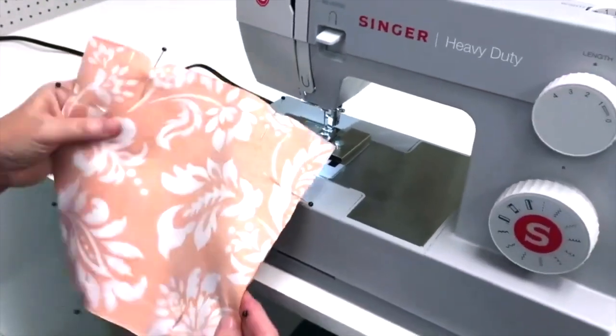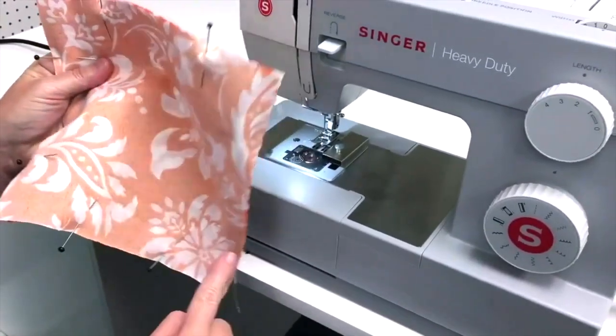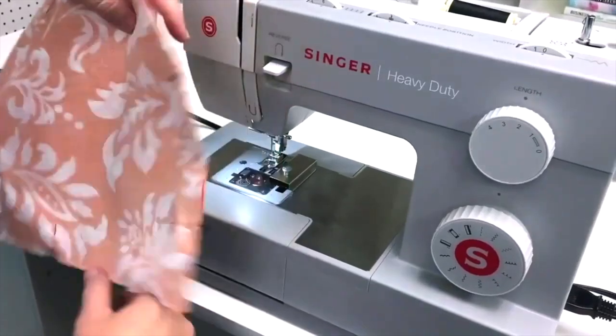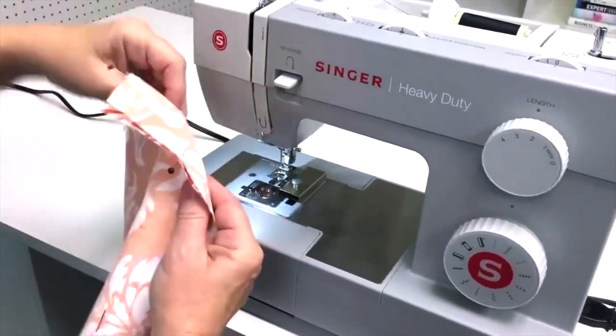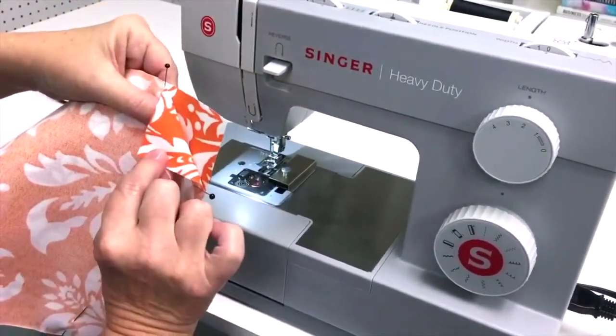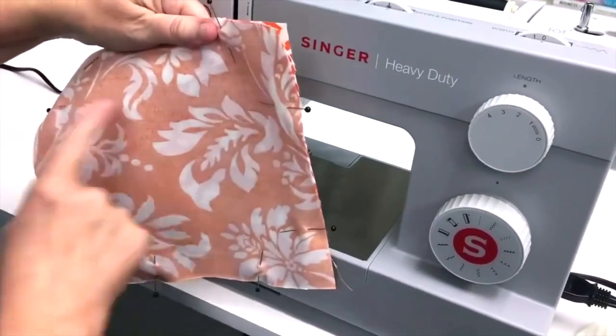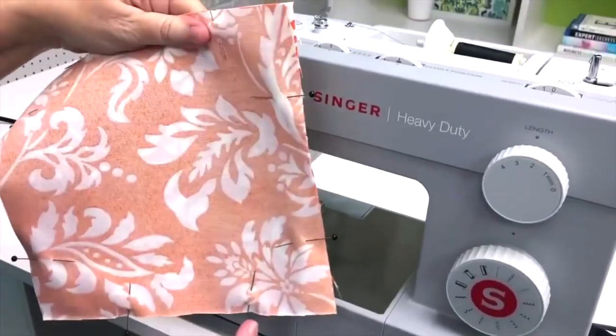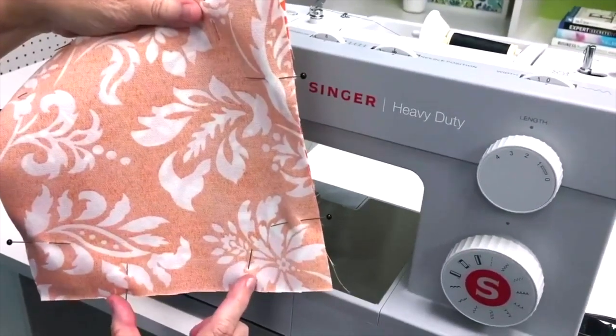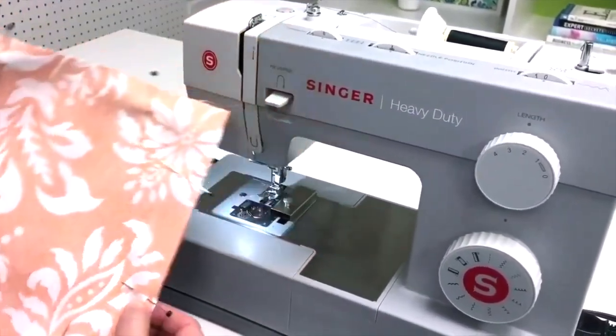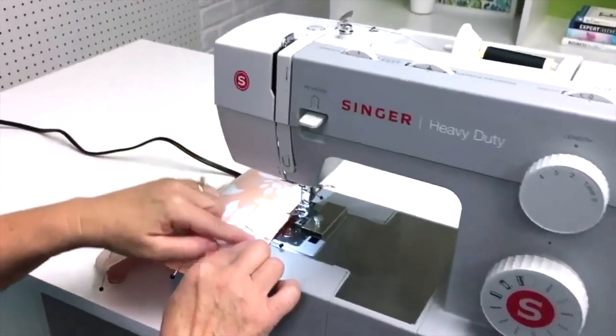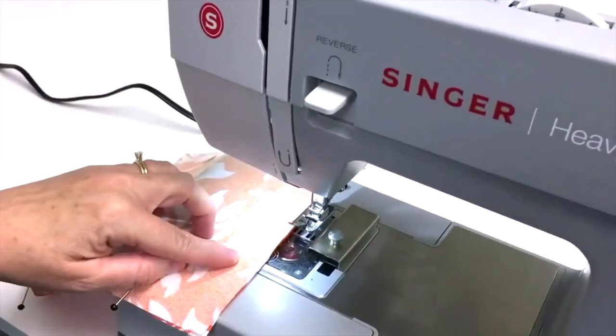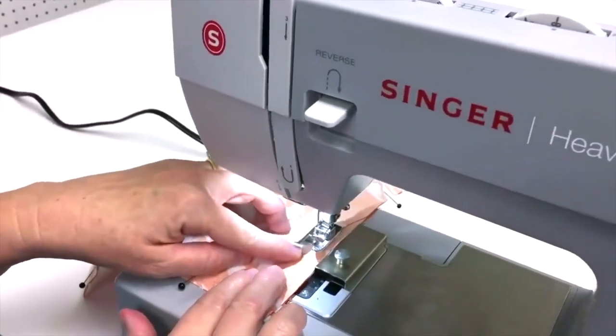In this lesson I'm going to show you how to turn the corner when making a pillow. I've cut two pieces of fabric and put them right sides together to make this small pillow. I want to leave an opening in the bottom to put the pillow form in, so I'm going to start stitching in the middle of the fabric on the bottom side. I'm going to take my pin out and put my fabric underneath the presser foot.